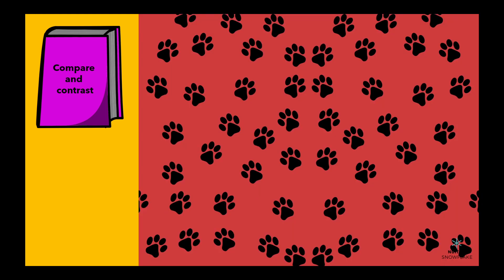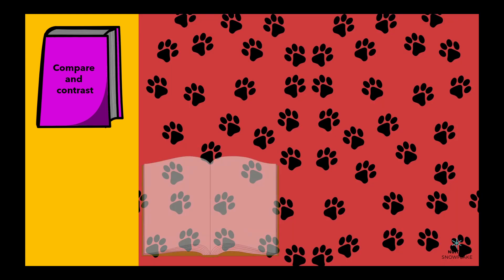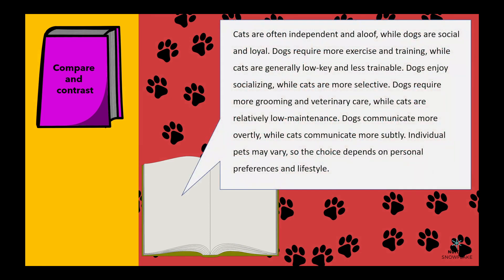For example, when we read about dogs and cats, we compare and contrast their personalities, behaviors, and abilities. This helps us understand the differences and similarities between the two animals.